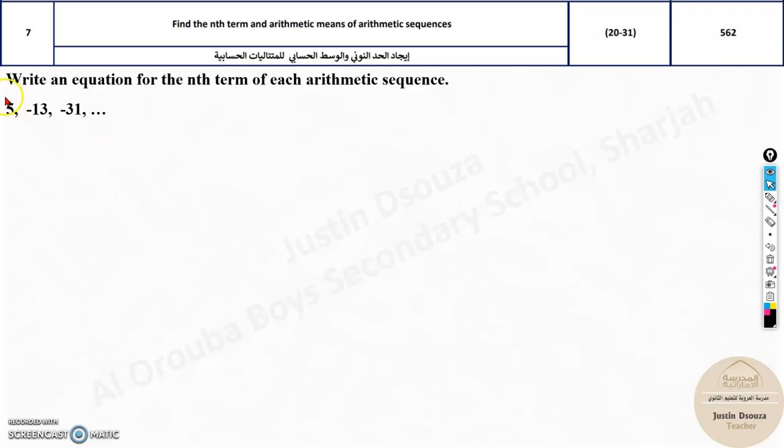We will see a problem, how easy it is. Write an equation for the nth term for each arithmetic sequence. Over here, this is given. It has 5, negative 13, negative 31. You do not need to find the common difference for everything. They have told this is an arithmetic sequence. Just find for the first value. Negative 13 minus 5, it will be negative 18.